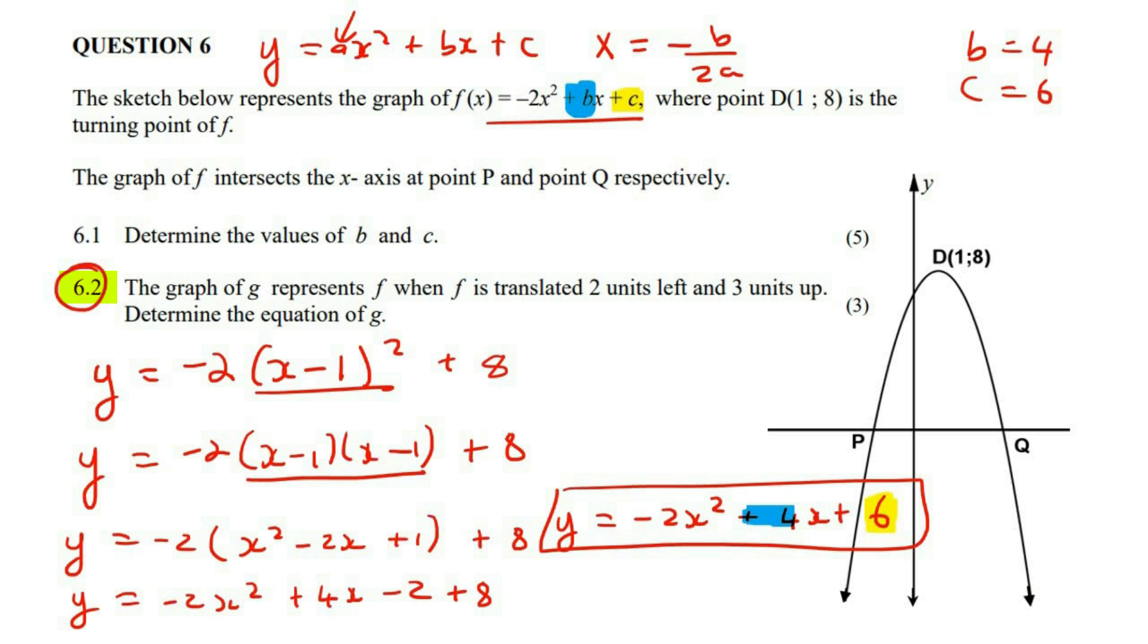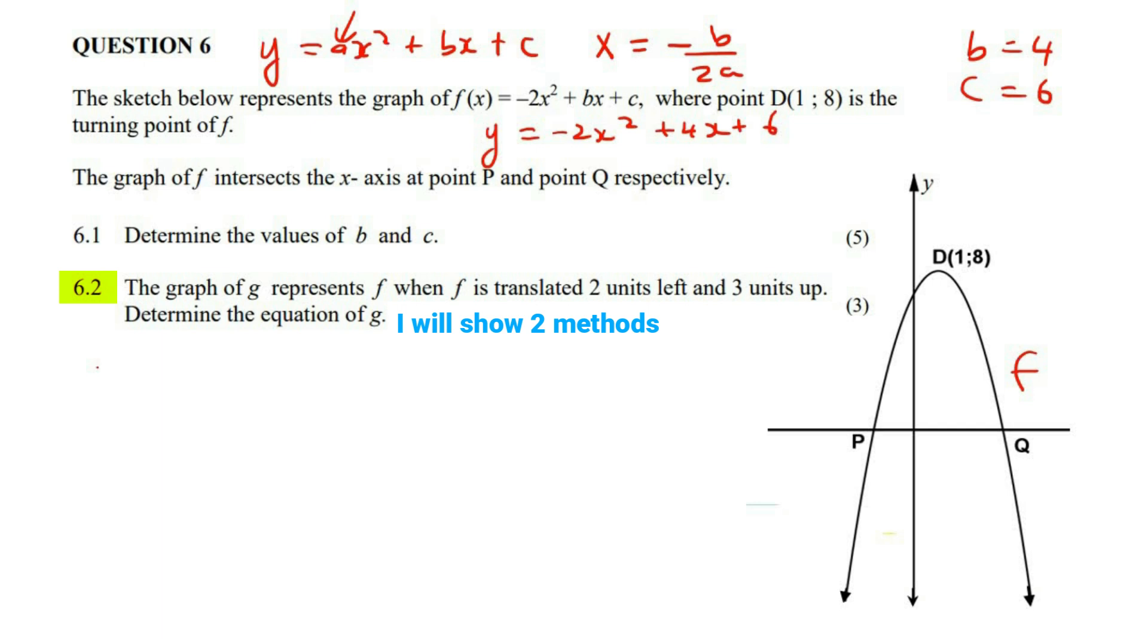This last part says that the graph of g represents f. So we have f at the moment. So now they're talking about some graph g, which is a new one. So it says that the graph of g represents f when f is translated two units left and three units up. Determine the equation of g.